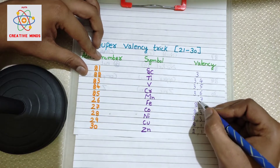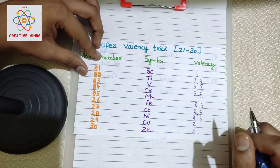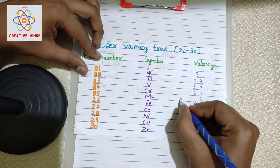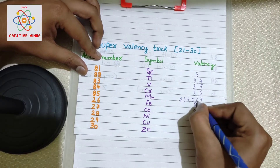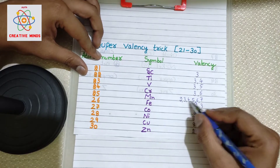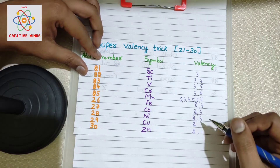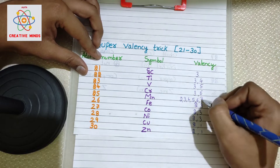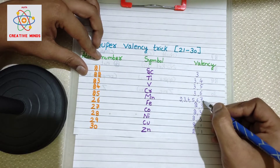Now we are left with manganese, which is almost like awesome — special! Why? Because it has two, three, four, five, six, and seven — this many valences we have for manganese.